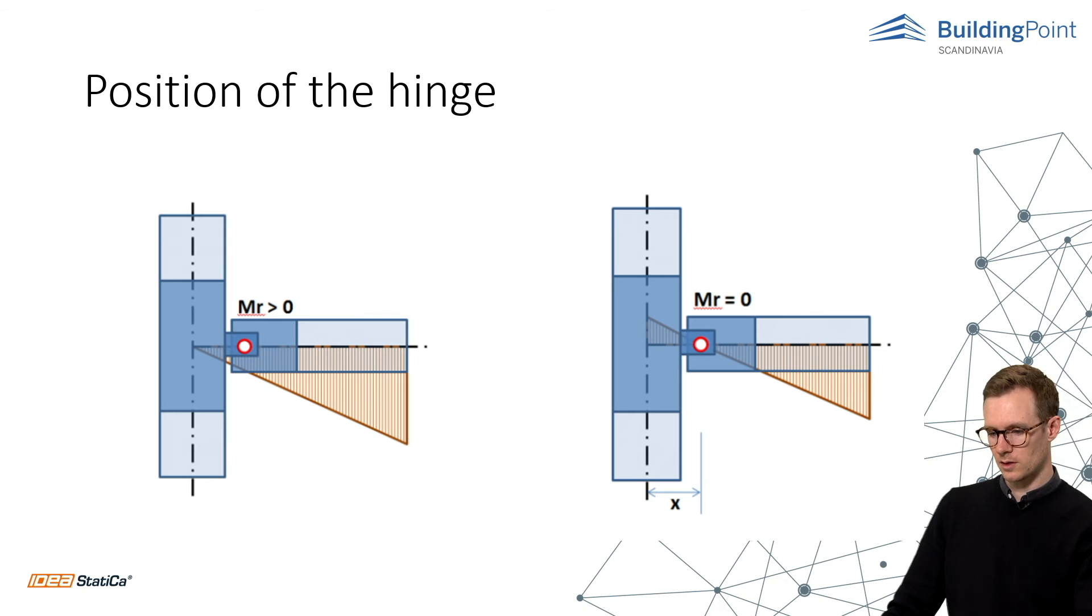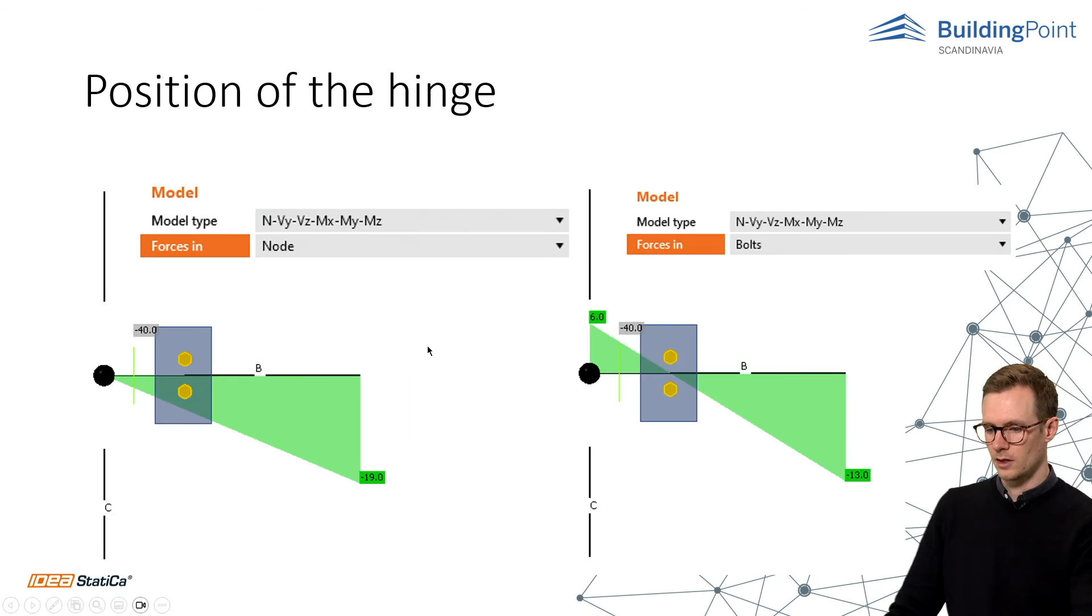Normally where the bolt is, like in this example on the right. How can we move this zero point? Well, in IDEA StatiCa, it uses the real model and not the theoretical one. So we have to choose where the zero will be. So we can choose in the pull down menu.